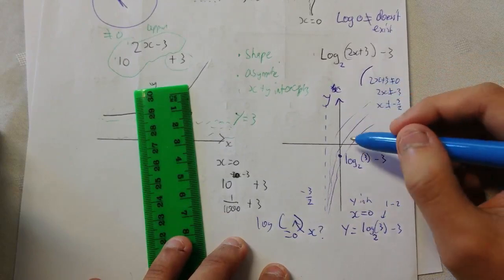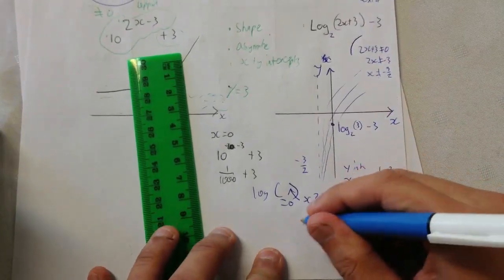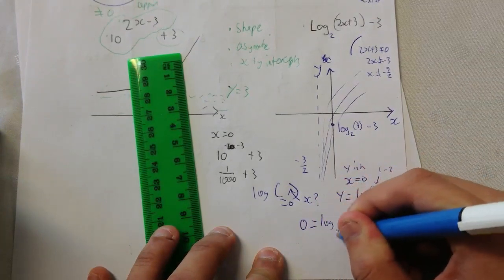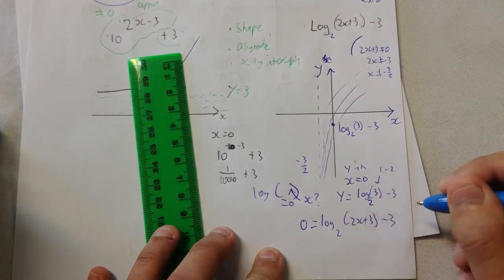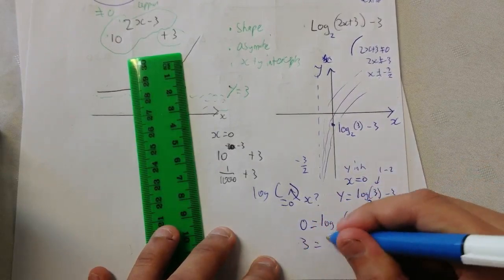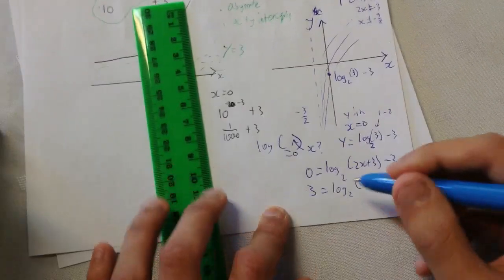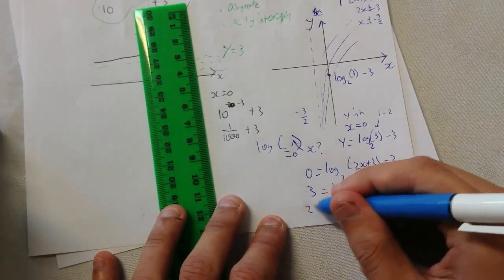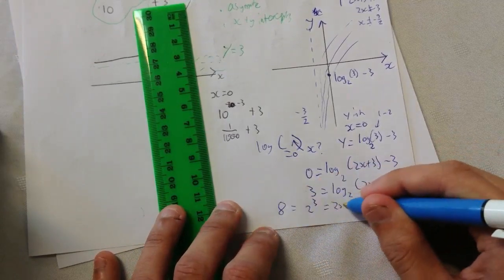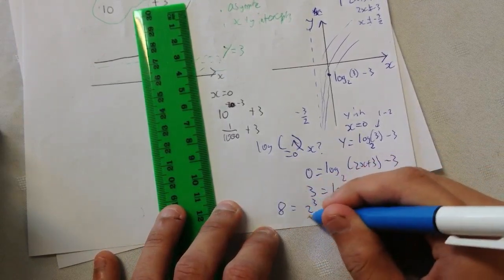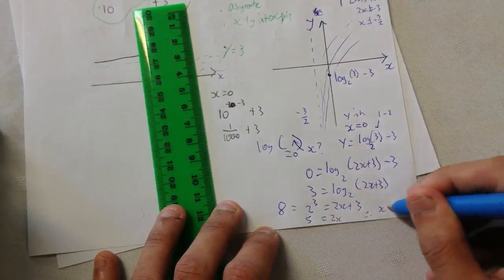Next, we want to find the x intercept. What we need to do is make this entire thing equal 0. So, we've got 0 equals log 2 of 2x plus 3 minus 3. We can get 3 over equals log 2 of 2x plus 3. And just like in the previous video, to get rid of log 2, you've got 2 to the power of both sides. So, 2 to the power of 3, which is 8, equals 2x plus 3. Therefore, 5 equals 2x. Therefore, x equals 5 on 2.